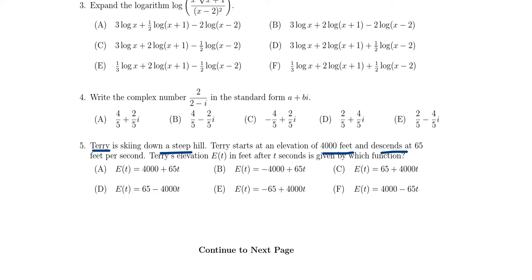Notice that if we're going down the hill, this slope going downwards gives us a linear function. Terry started off at 4,000 feet, that's the initial value. Then we're descending at 65 feet per second, so that's a description of a rate. That's going to be the slope.